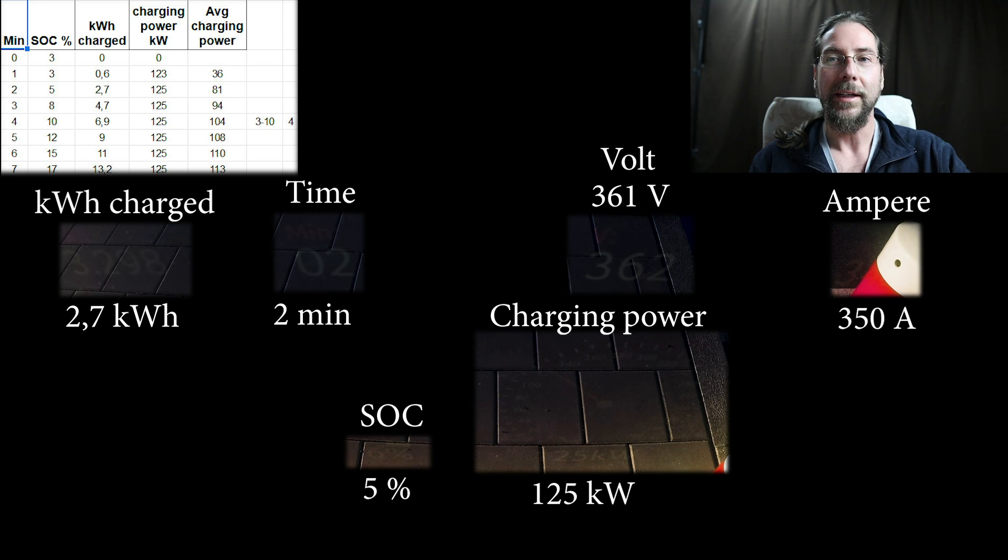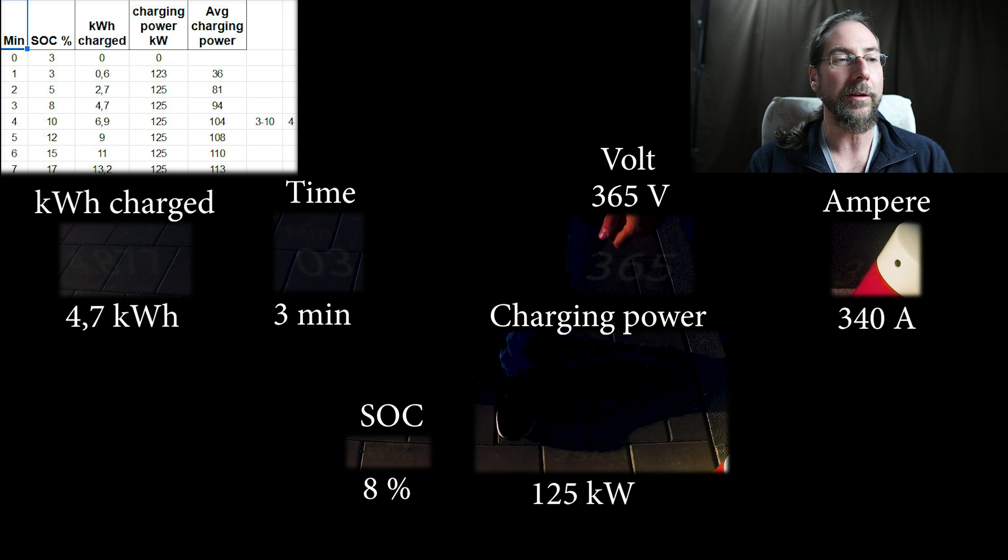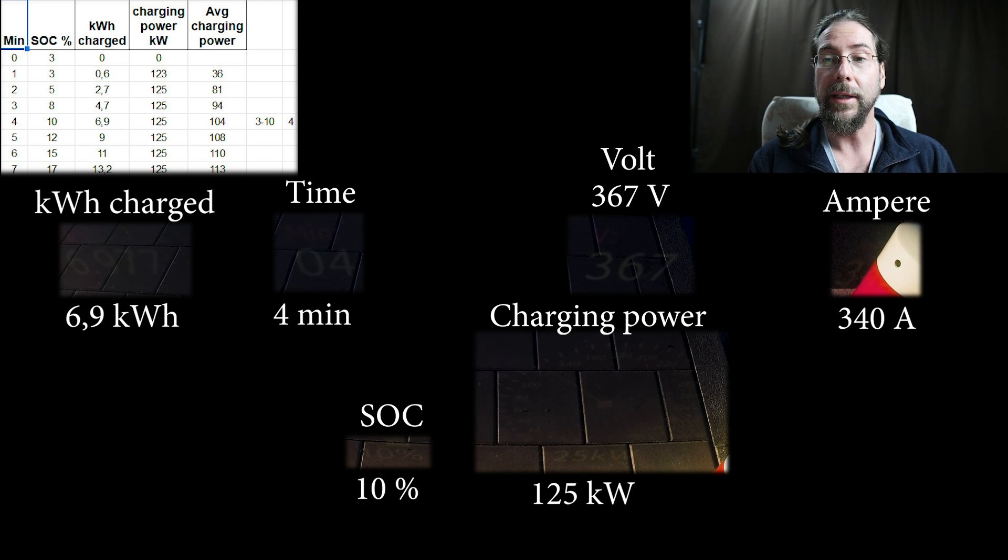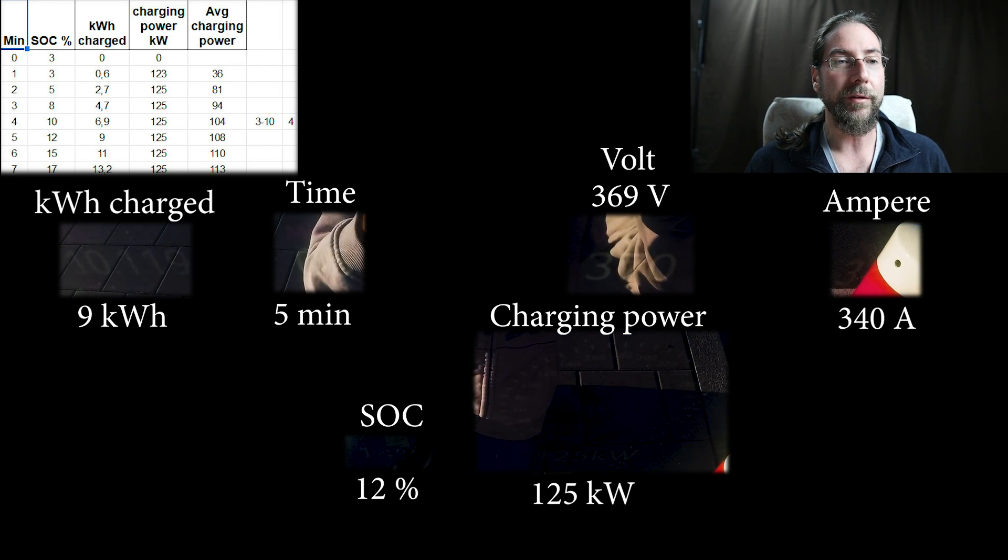It starts off with 123 kilowatts and it goes up to 125 in just a minute, and that's just awesome. 10% is reached in just four minutes and in those four minutes, 6.9 kilowatt hours have been charged. You can see the voltage is lower than in the first editions and 58 kilowatt hour battery, but the amps go up to 350 in the beginning and then of course it goes down.